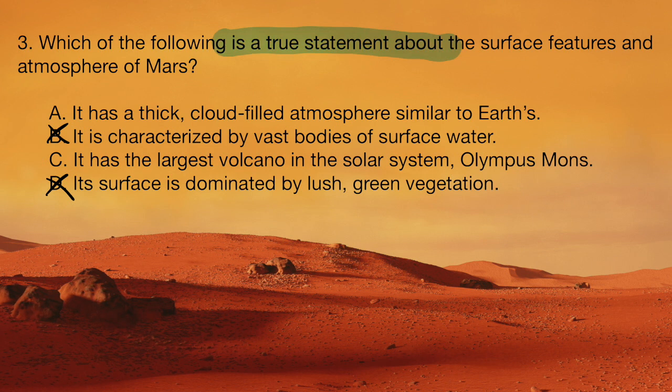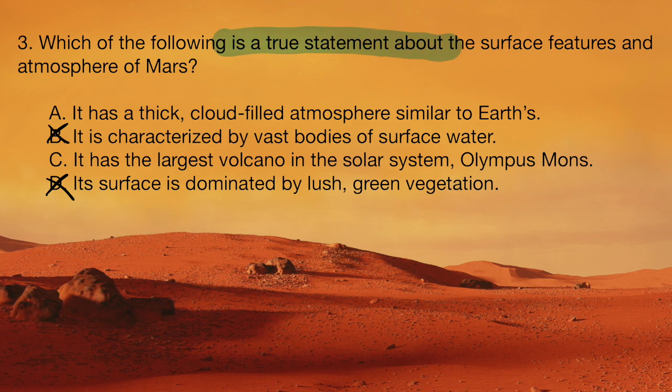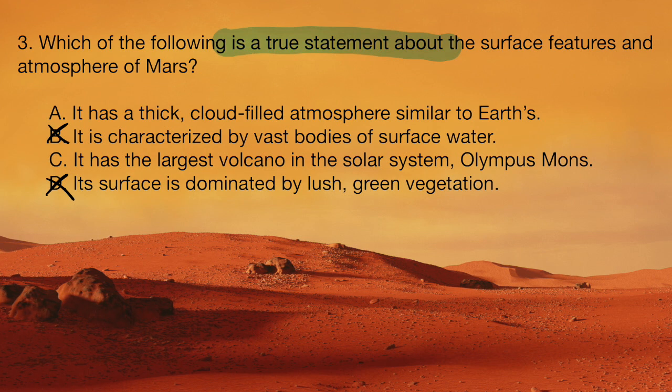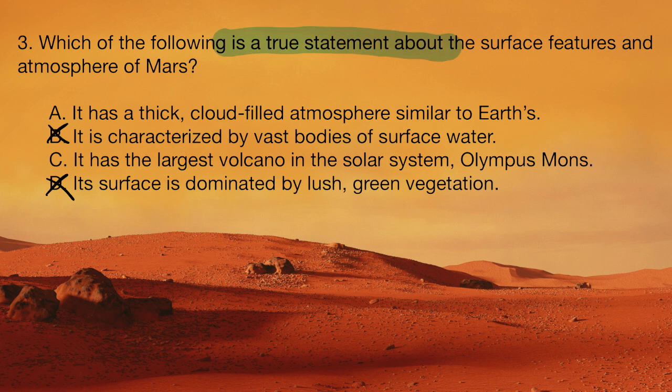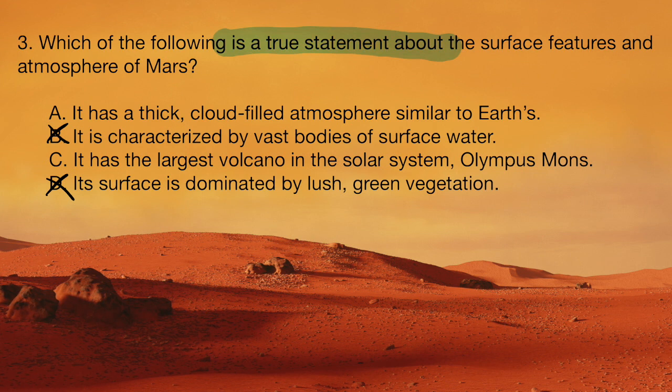B is not the answer. It does not have large bodies of surface water. If that was the case, we would already kind of know that. That would be a pretty obvious thing. But we know that Mars is pretty kind of desert-like.